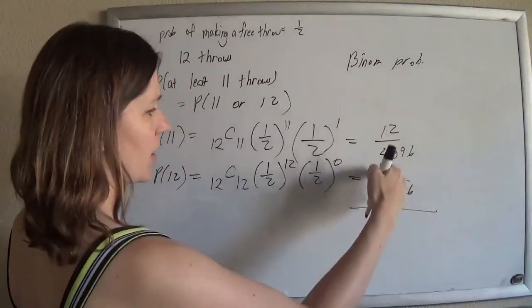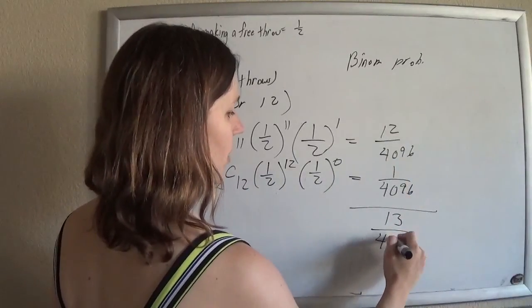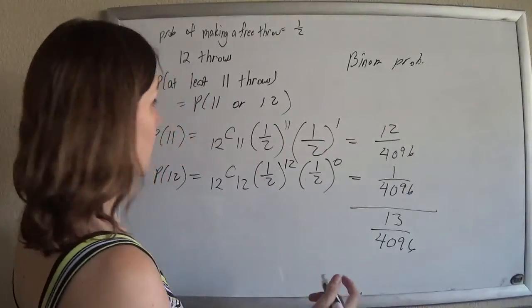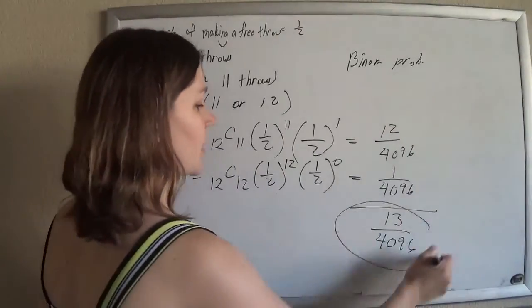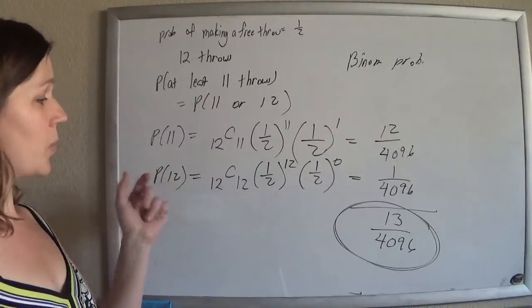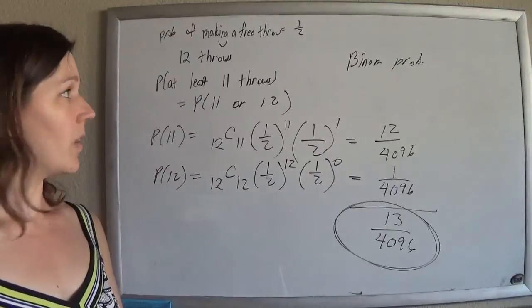So if I add these probabilities, there's a 13 out of 4,096 chance of making my shots. And that's actually what I want this time. I'm not doing anything finding what I don't want. That's what I want. 11 or 12, and you find yourself saying, or, you tend to add. There you go.